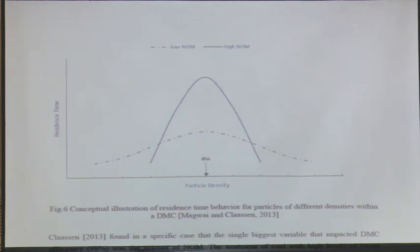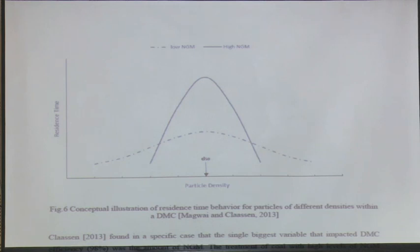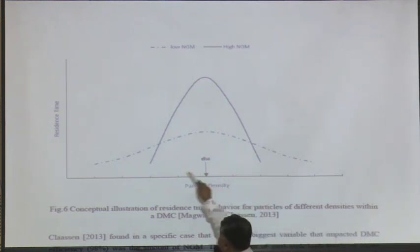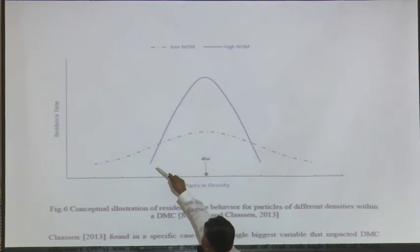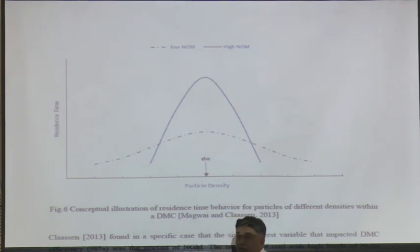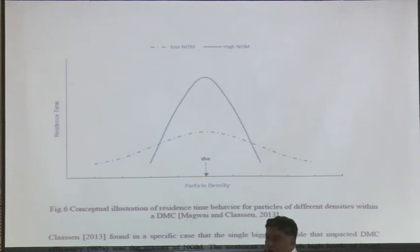If you look at this curve, he basically says that if it is high NGM, then the residence time requirement for those particles to report to any product — not necessarily the right product, but any product — is long. This is your cut density, this is the range plus or minus 0.05 or 0.1, and these are the NGM particles which continuously remain retained within the cyclone until they report to some product.